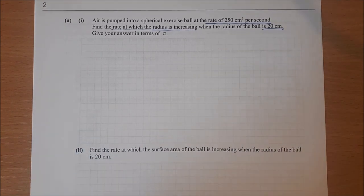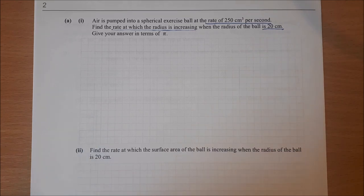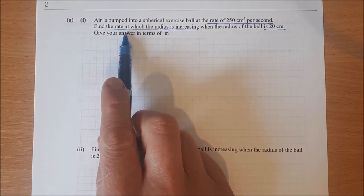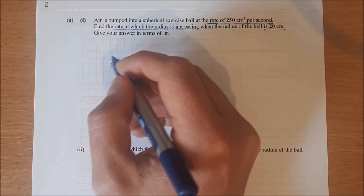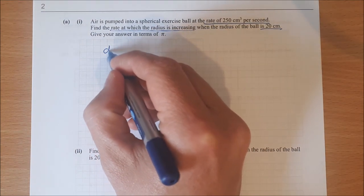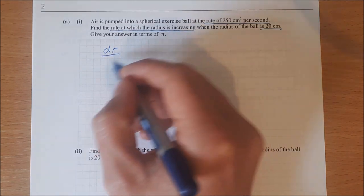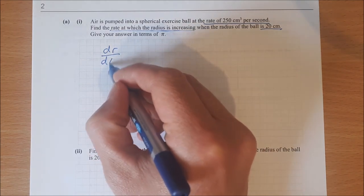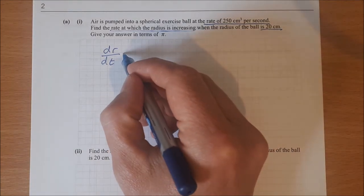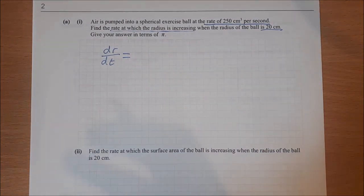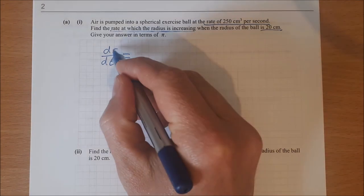We have to make our rates of change formula. They're asking us to find the rate at which the radius is increasing, so the radius is dr and the rate is time, so it's dr/dt. That's the starting bit of it. The way I like to do the rates of change formula is I get my dr/dt and I split it up into two separate fractions, my dr and my dt.